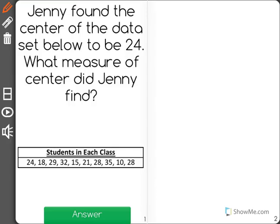Jenny found the center of the data set below to be 24. What measure of center did Jenny find? Now, there are three different types of measures of centers. You could have the mean, the median, or the mode.